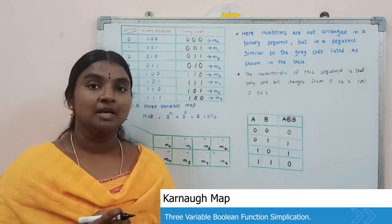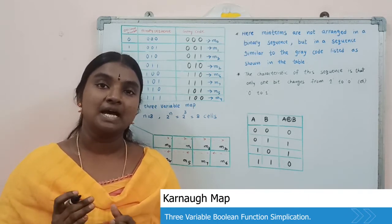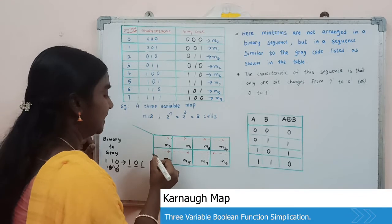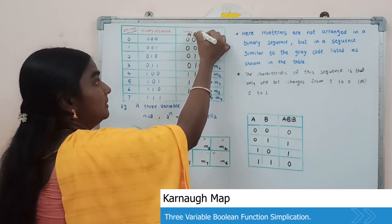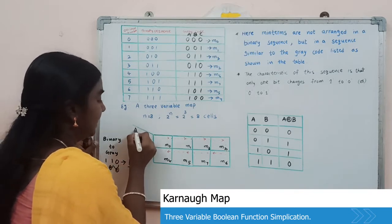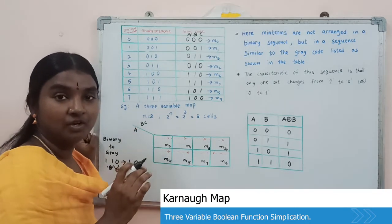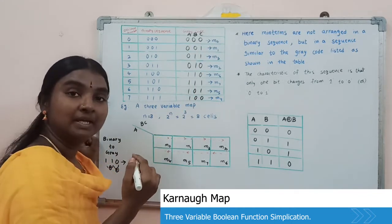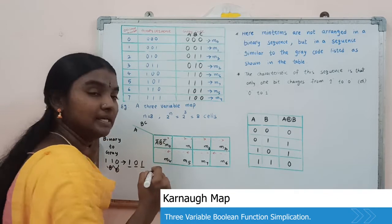The main use of this Gray code is that it gives a one-bit difference between each adjacent cell. Considering variables A (for rows), B and C (for columns), the min term M0 can be written as A complement, B complement, C complement, because 0 bits are represented with complement variables and 1s with normal variables.